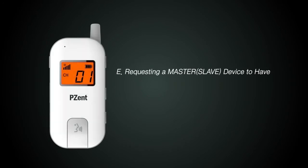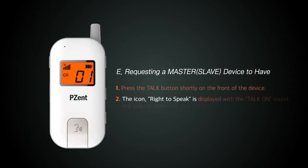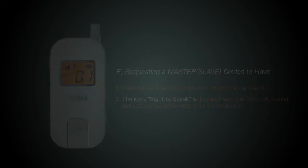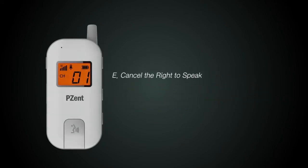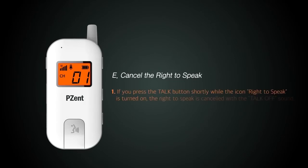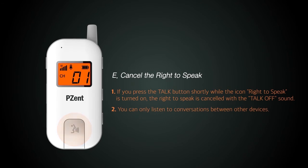This is how to use the talk function of the master and slave. When you need to communicate, press the talk button on the front and release. To disconnect the talk function, after the communication is finished, press the talk button on the front once again and release to disconnect.